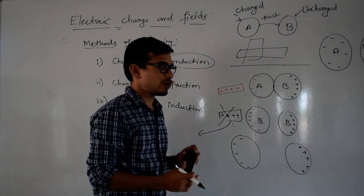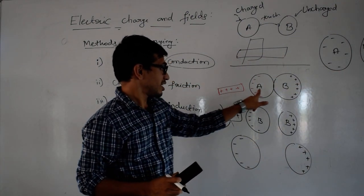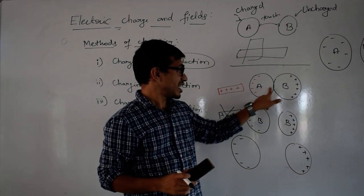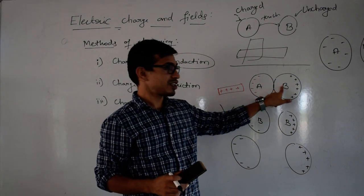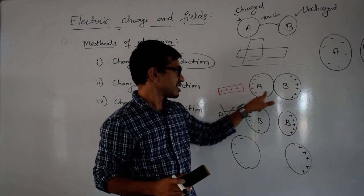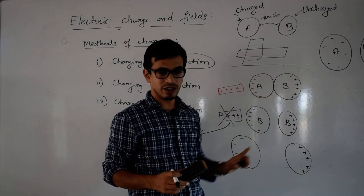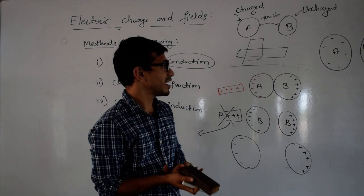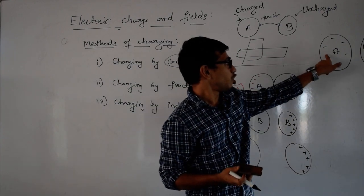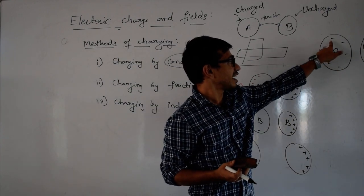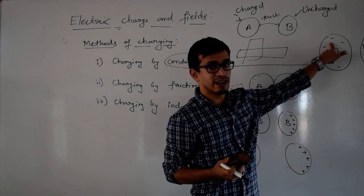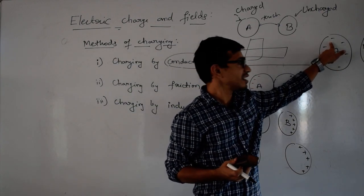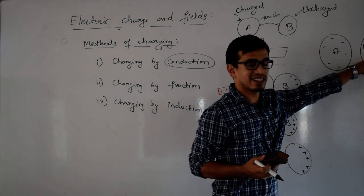First, this object is uncharged — the number of protons is equal to the number of electrons. Now object A is negatively charged, so the negative charges are on one side and the positive charges redistribute on the other side.